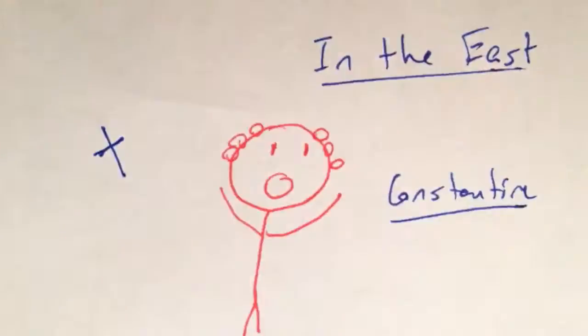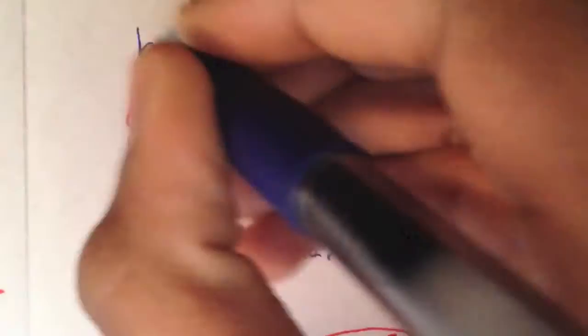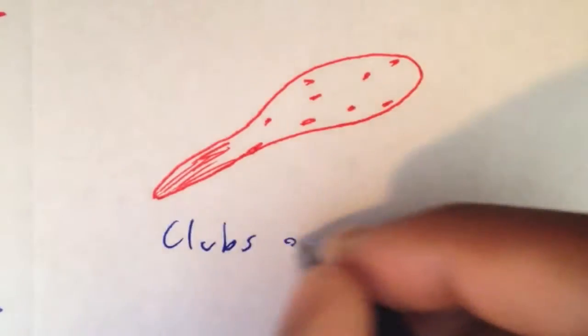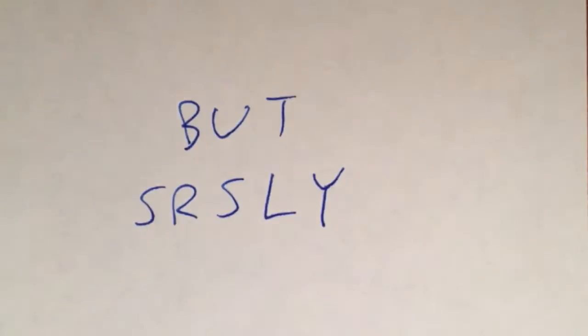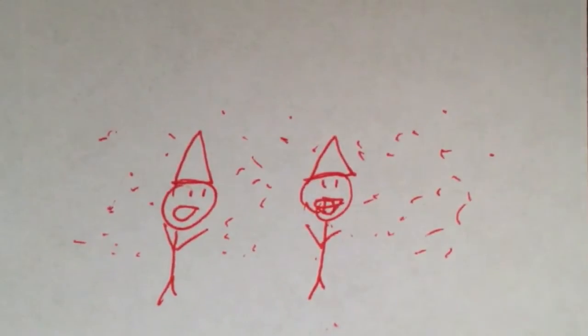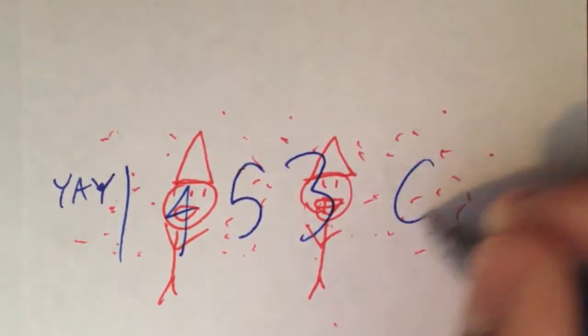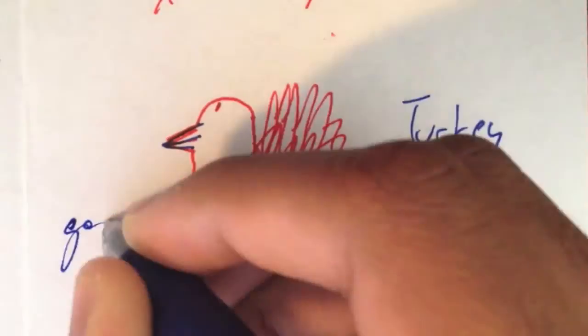In the east, Constantine changed religion to Christianity, while the west was being taken over by barbarians, with their clubs of manliness. The east thrived until 1453 CE, with their capital in Byzantium, later named Constantinople, until they were taken over by Turks. Turkey win, gobble gobble.